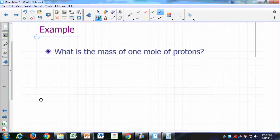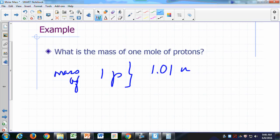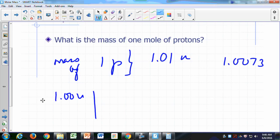What's the mass of one mole of protons? What's the mass of one proton? 1.01 atomic mass units, right? 1.0073. So 1.01 atomic mass units, so you would say, 1.00 atomic mass units, how do I change that to grams? What goes in my numerator here? One gram is how many atomic mass units? 6.02 times 10 to the 23rd atomic mass units.